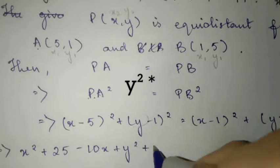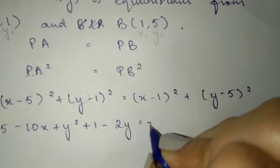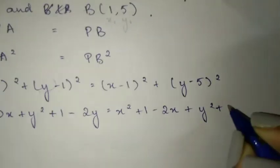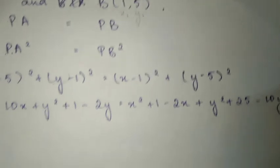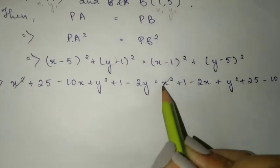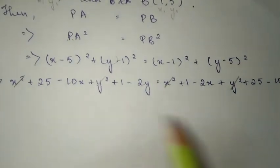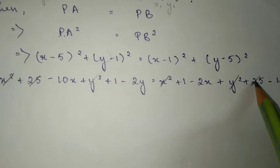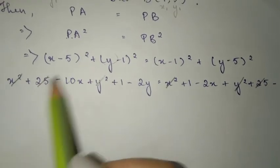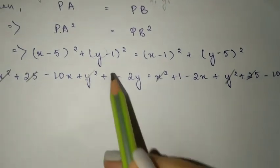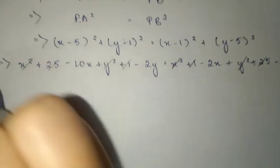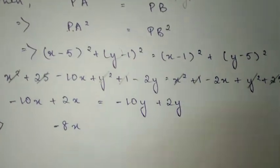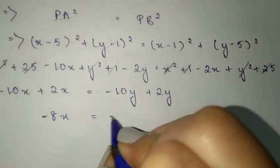So we get: x² + 25 - 10x plus y² + 1 - 2y equals x² + 1 - 2x plus y² + 25 - 10y. Here, we cancel x² from both sides, and y² also cancels out. 25 and 25 cancel, and 1 and 1 cancel. We are left with -10x minus 2y on one side and -2x minus 10y on the other, which simplifies to -8x equals -8y.